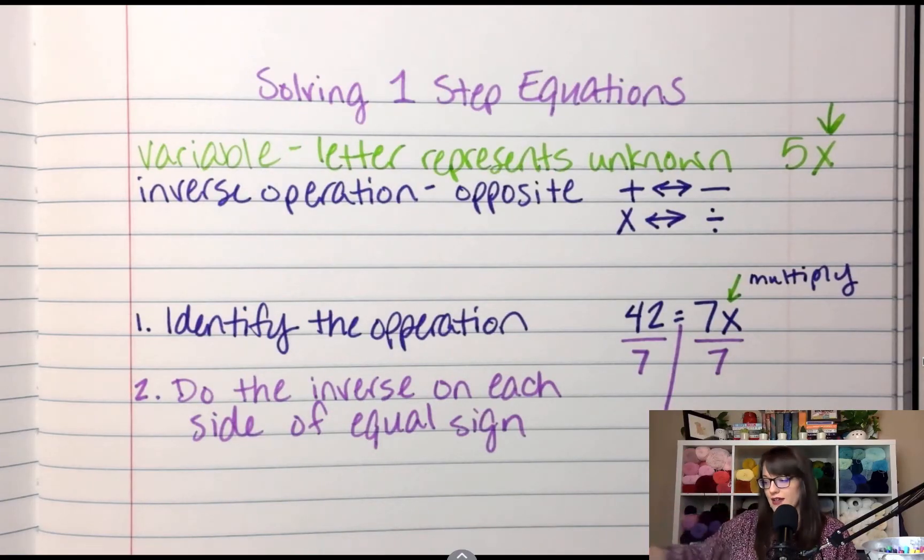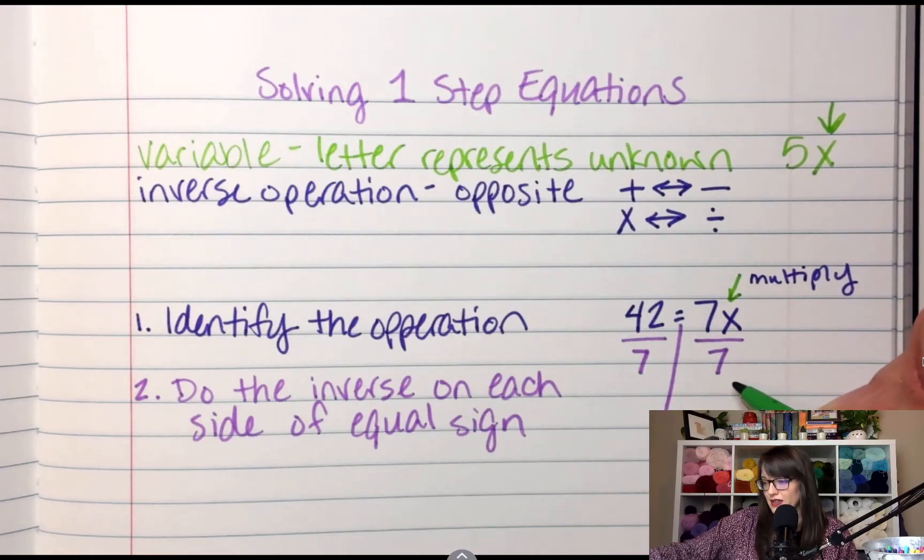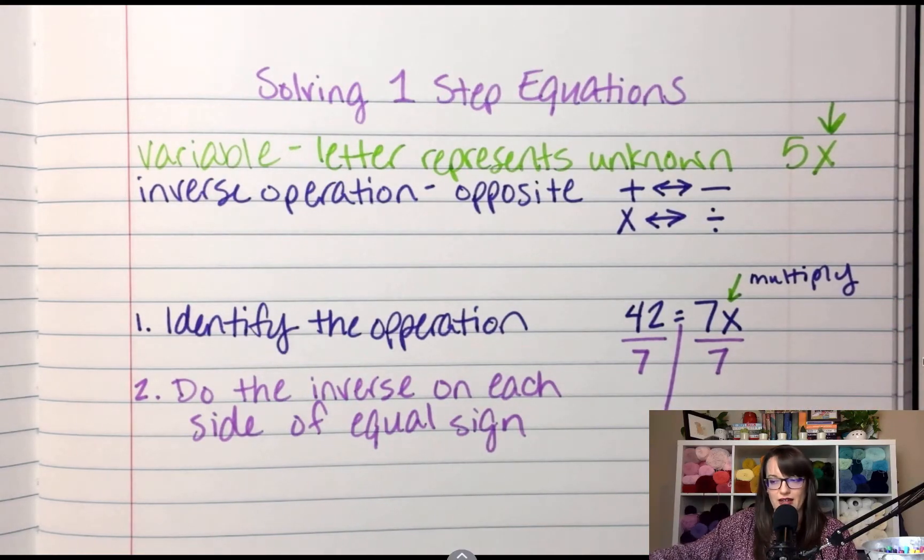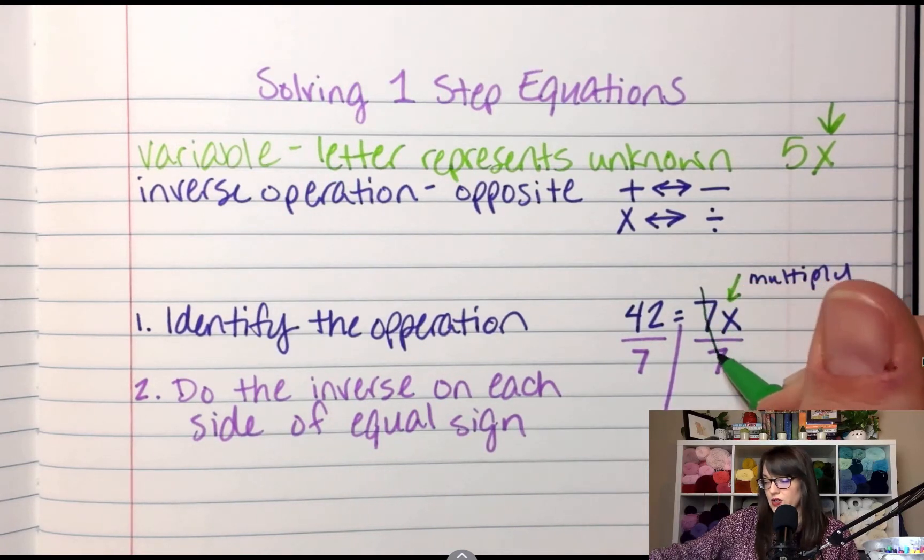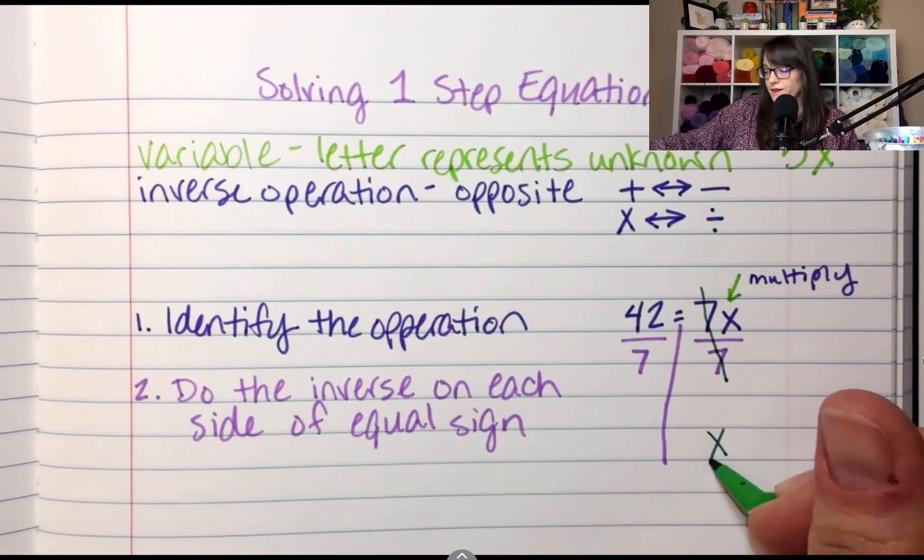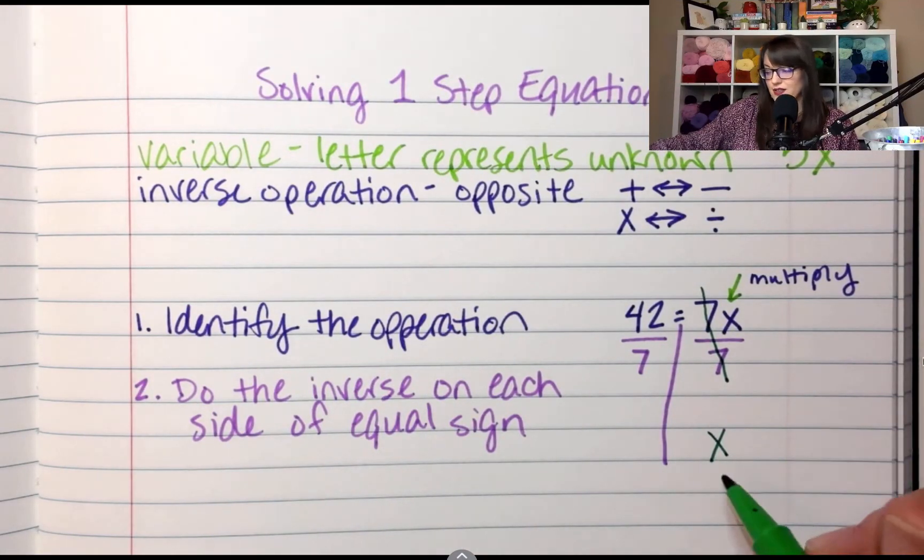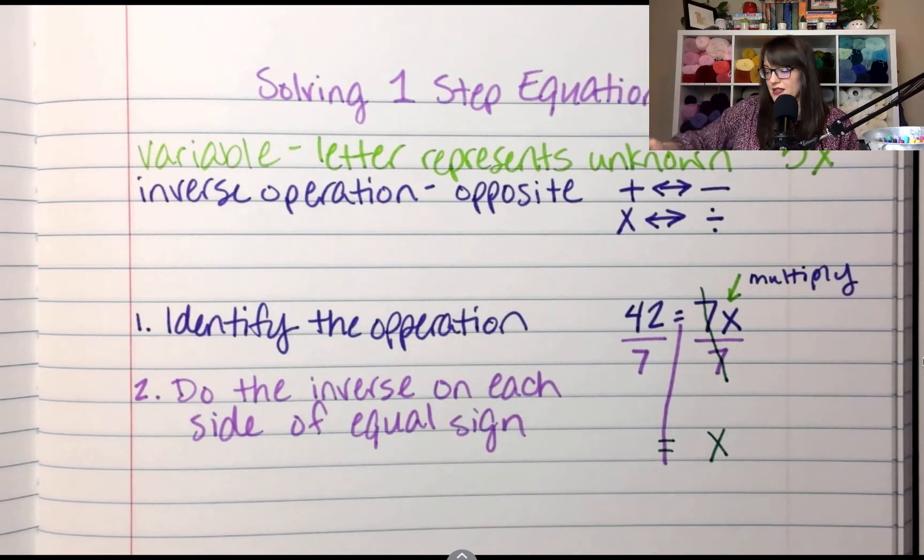So if I do 7 divided by 7, what is 7 divided by 7? That's 1. So the way we do that is we're going to cross them both out, and if it's just 1X, I can just write X. There's no number, that's just 1X.